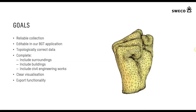There's still a lot of work to be done, but focusing on reliable collection and editing within our BGT application we think we can do a lot of interesting things with 3D. We also want to include topological checks in 3D, which we're still working on. The models are only complete if we include all the surroundings — also buildings, but also civil engineering works like bridges and tunnels. We want the visualization to be clear; it doesn't have to be pretty as long as it's correct. Then we want to be able to export all these correct 3D models.